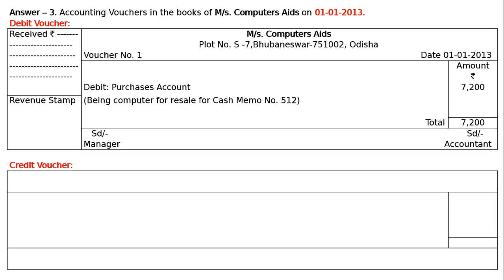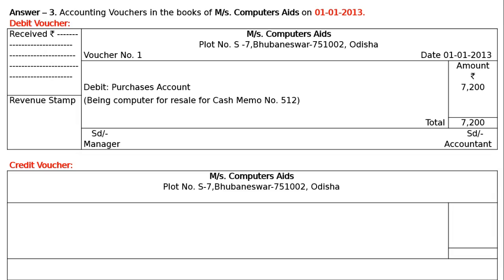Then, credit voucher. We have to write down the address of the shop with the shop name. We will have to write down voucher number 1, that is credit voucher. In the date column, that is on January 1, 2013. Then we will have to write down the amount with rupee symbol.